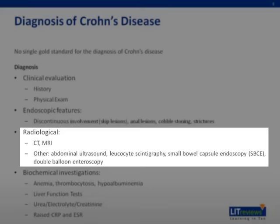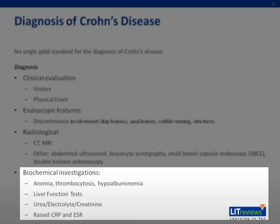Biochemical investigations look for anemia, thrombocytosis, and hypoalbuminemia. There may also be electrolyte abnormalities. One should also perform liver function tests, looking for raised alkaline phosphatase and gamma-glutamyl transferase levels. Raised C-reactive protein or erythrocyte sedimentation rate are common findings in the blood work of patients with Crohn's.